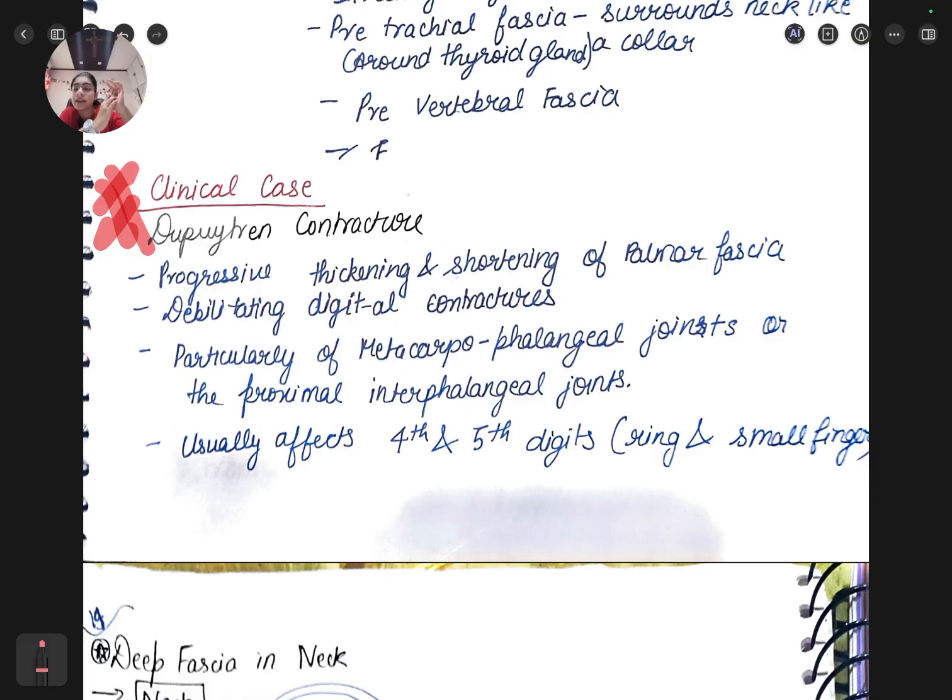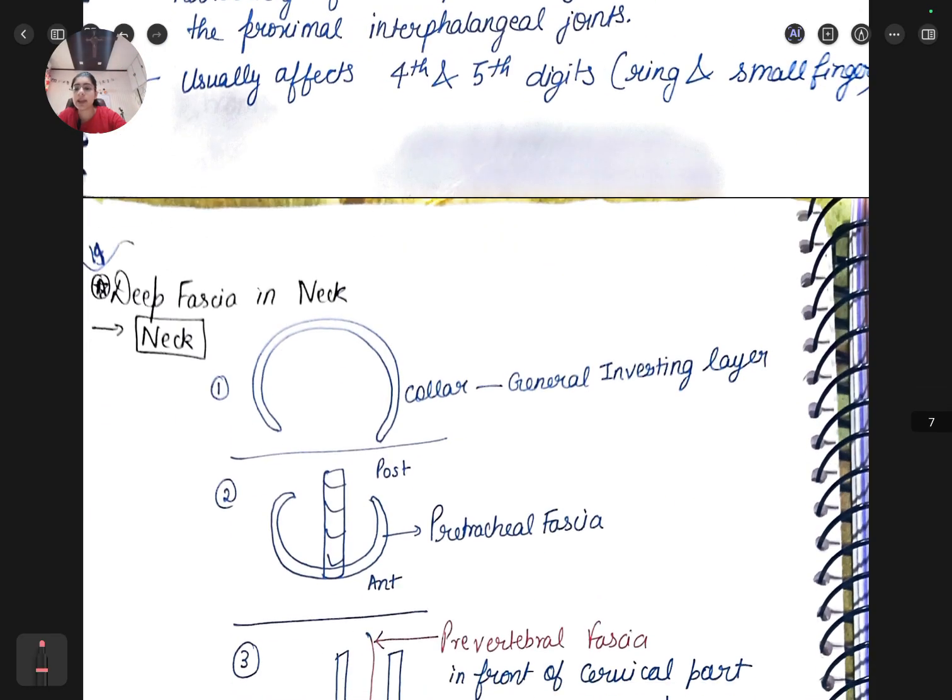In clinical case is Dupuytren contracture. Progressive thickening and shortening of the palmar fascia - if it becomes thick and shortened then our fingers would contract. Digital contraction means fingers, particularly of the metacarpal phalangeal joint and the proximal interphalangeal joint. Usually it affects the fourth and fifth digit, the ring and small finger.